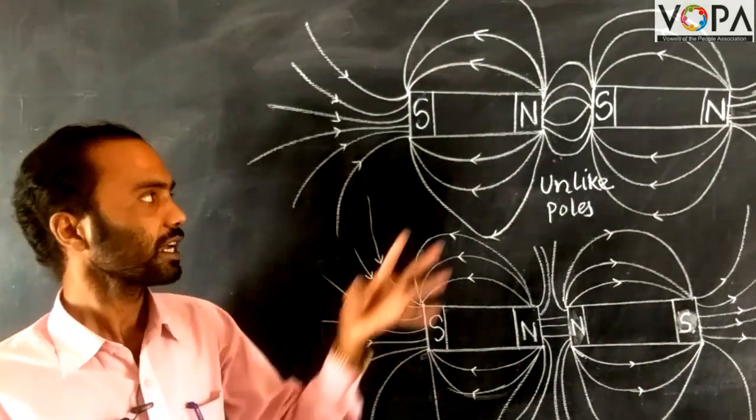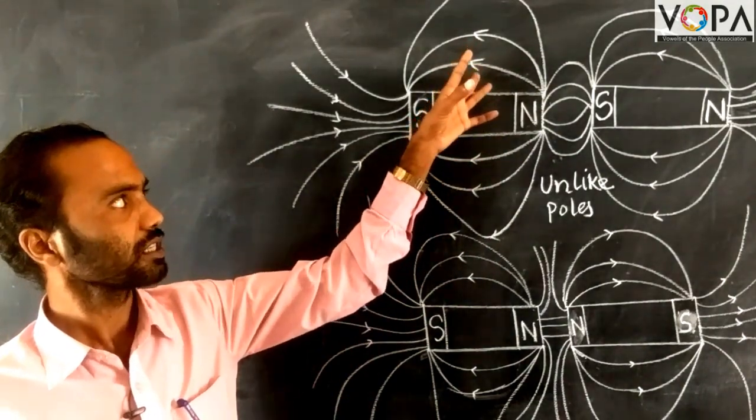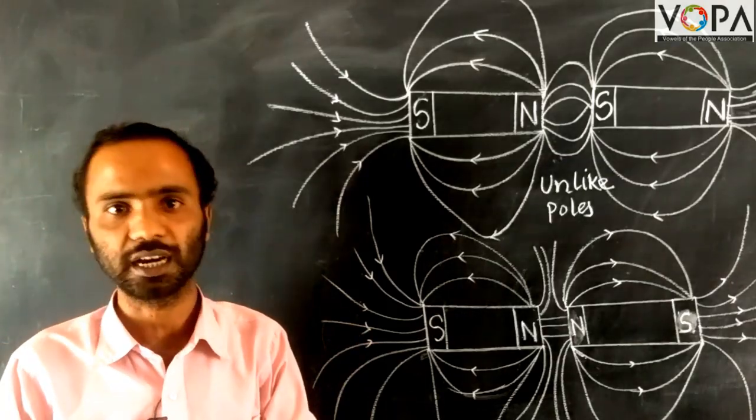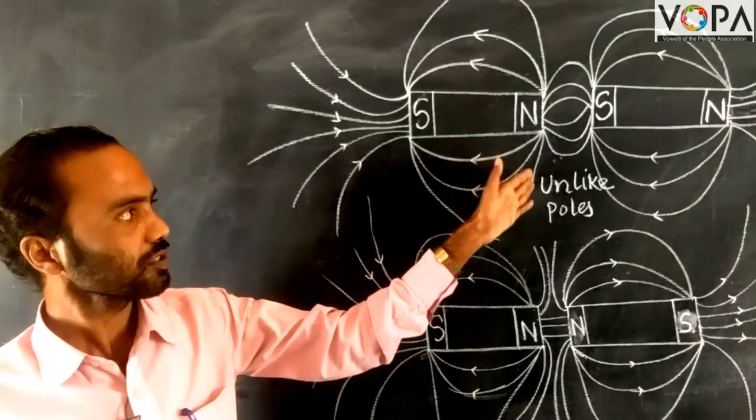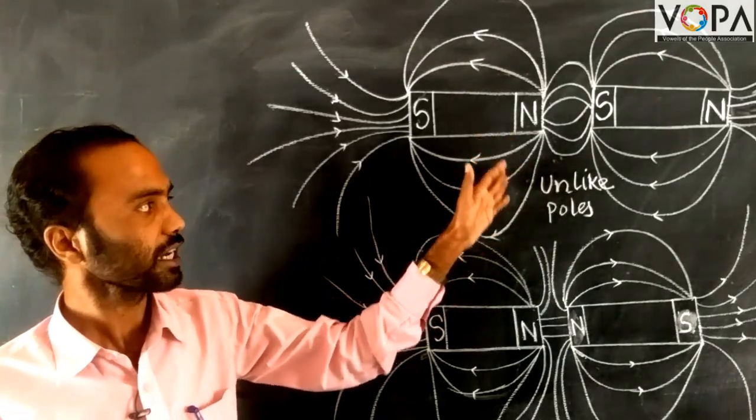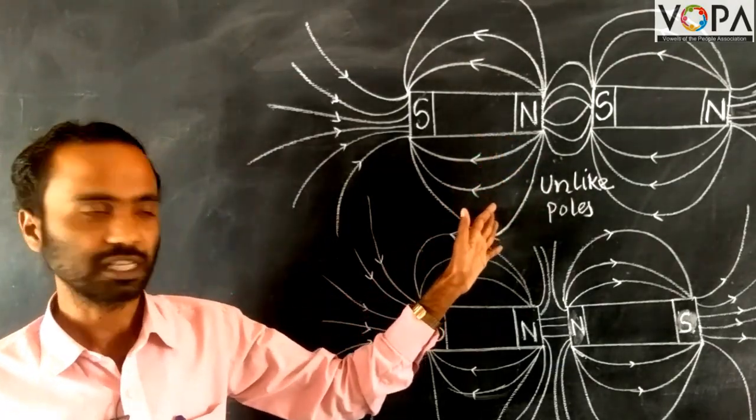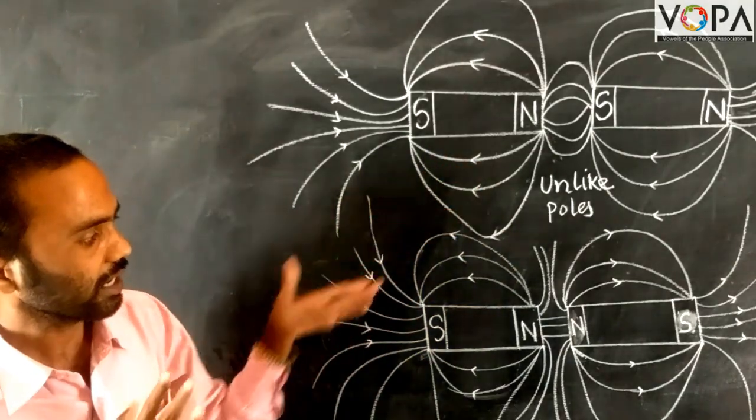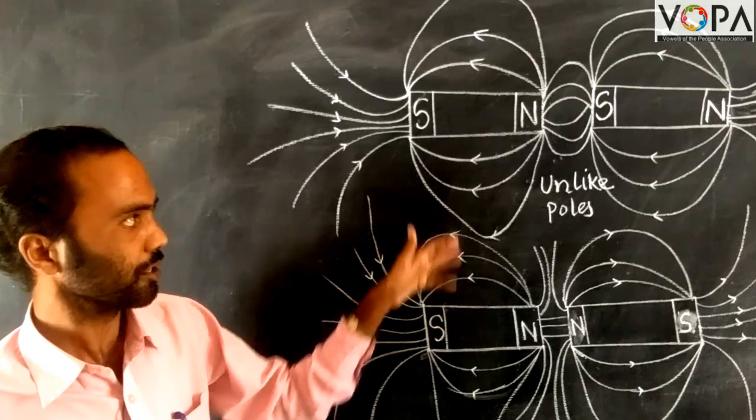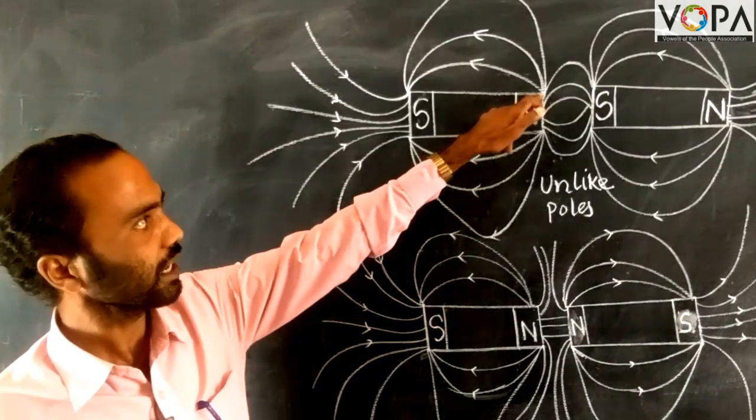These magnetic lines are like stretched springs. These lines of magnetic force do not intersect each other. Each of these lines is an independent line.